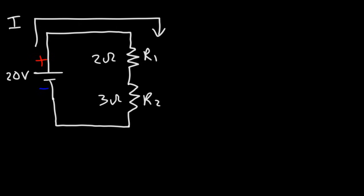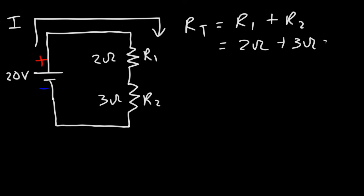Before we can calculate the current in a circuit we need to determine the total resistance. For resistors in series, the total resistance is the sum of all the resistors. So in this example it's simply 2 plus 3, which is 5 ohms — that's the total resistance of this circuit.